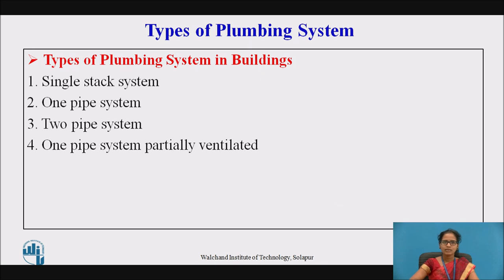There are various types of plumbing systems in buildings. The first one is the single stack system. The second is the one pipe system. The third is the two pipe system. The fourth is the one pipe system, partially ventilated. Let us see them one by one.